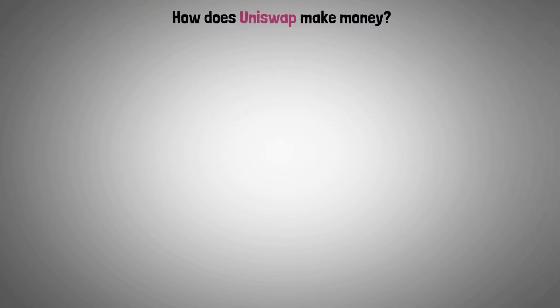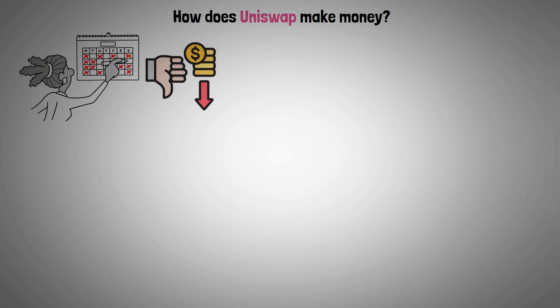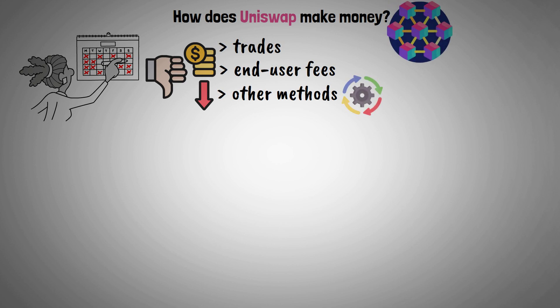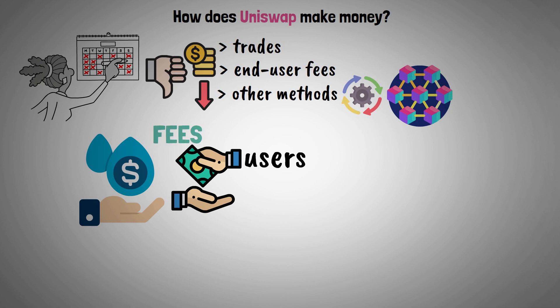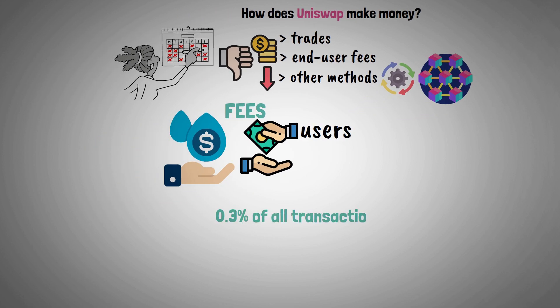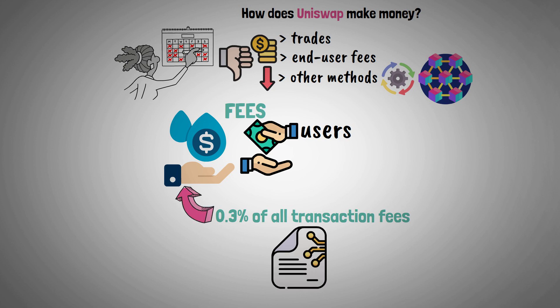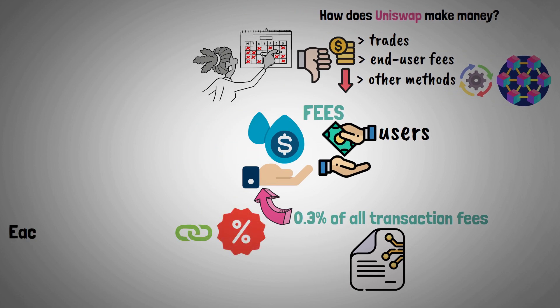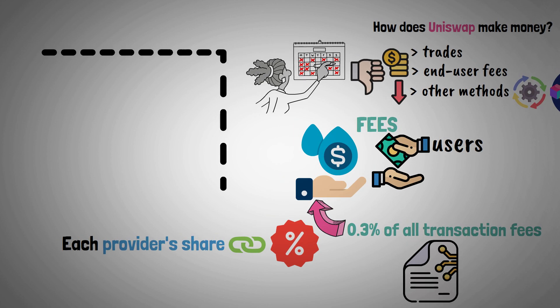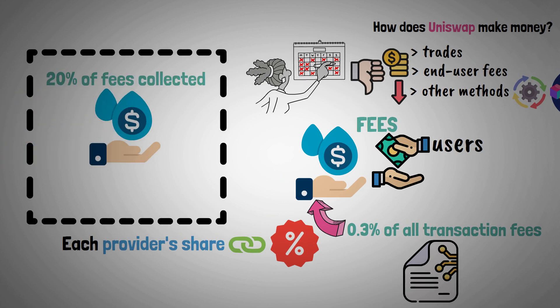Now let's examine how Uniswap makes money. In the past, Uniswap was not profitable from trades, end-user fees, or any other methods typically used in the blockchain industry. Liquidity providers receive payment from users in the form of fees — 0.3% of all transaction fees collected by the pool contract on a transaction are given to these liquidity providers. The charge is determined in accordance with each provider's share; for instance, a provider receives 20% of the fees collected if they contribute 20% to the liquidity pool.